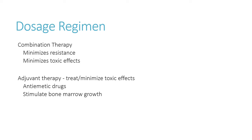Imagine telling a patient they have to come into the infusion center every week and feel nauseous every time. Patients can even develop anticipatory nausea and vomiting — just knowing it's coming can make them nauseous. We have different medications for that than for the drug-induced nausea itself. We can also give colony-stimulating factors to help stimulate the bone marrow to replenish white blood cells or red blood cells and try to bring levels back up.